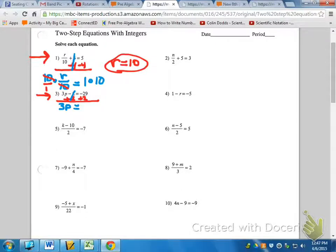Negative 29 plus 2. That means I'm $29 in the hole and I gained 2. What is that? Negative 27.